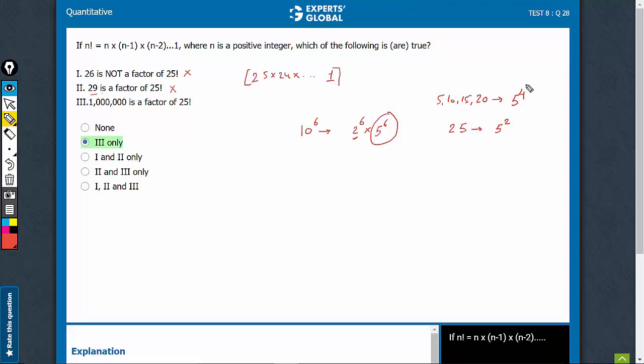This is a very important concept, the concept of highest power of a prime number. In case you're not familiar with this concept, please watch our video. Straightforward to find the number of 5's in 25 factorial. We say 25 upon 5, 5 and then 5 upon 5, one more. There are going to be 6 5's and therefore 1 million is going to be a factor of 25 factorial.